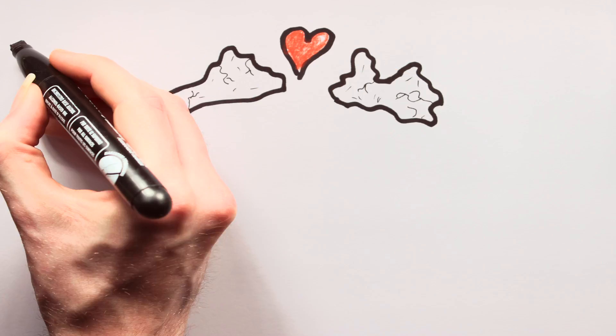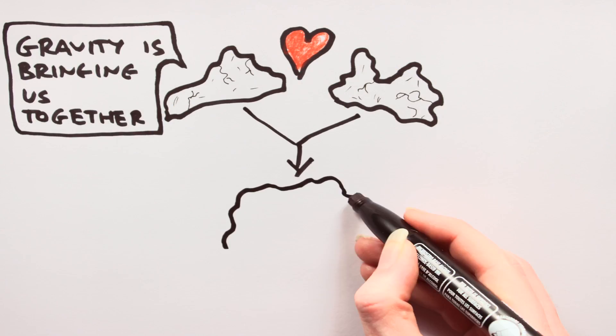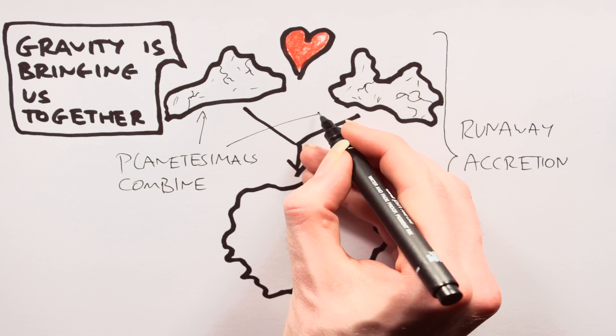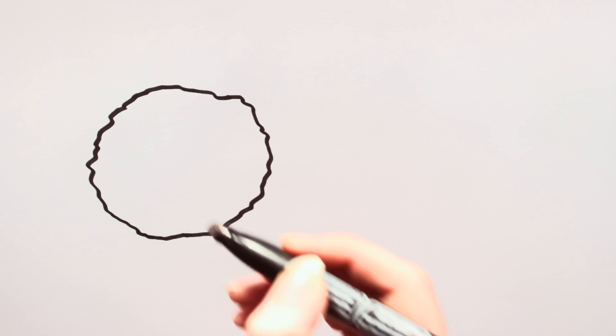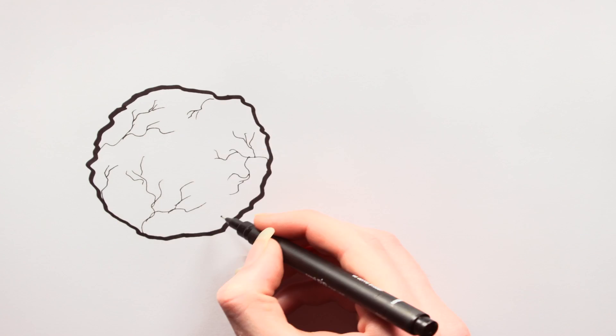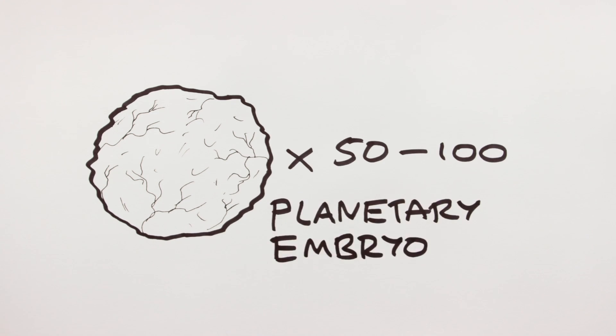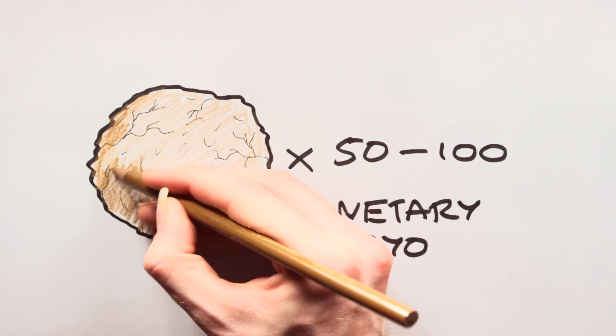Once massive enough, gravity caused runaway accretion to occur, which sped up the growing process of these planetesimals. It is thought that the inner solar system at this point contained 50-100 moon-to-Mars sized objects known as planetary embryos.